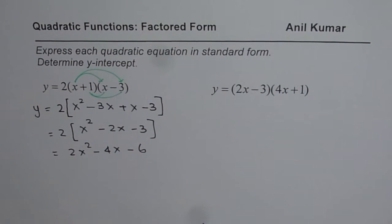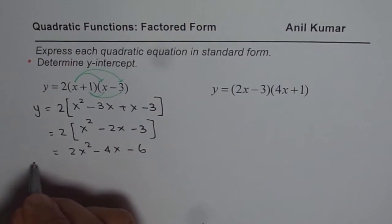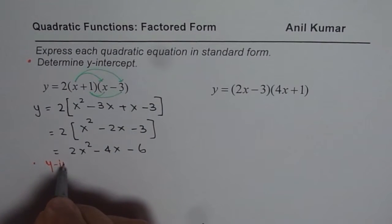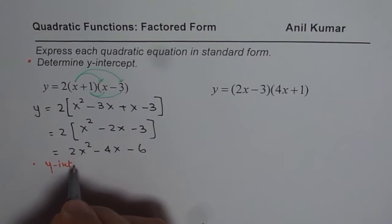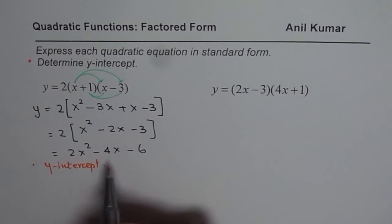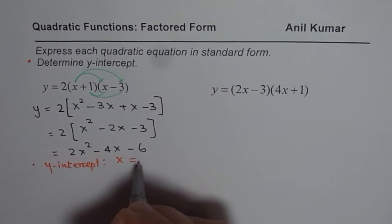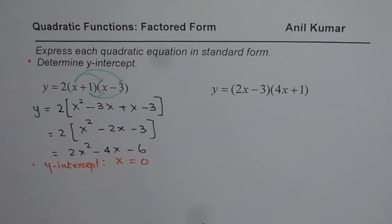That gives us the quadratic equation in standard form. Now let us do part B of this question, which is to find the y-intercept. The y-intercept is the point where the graph crosses the y-axis. At that point, x is equal to 0. So if we substitute x equals 0, we get the y-intercept.